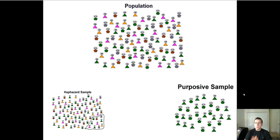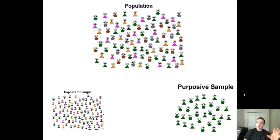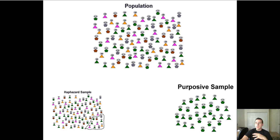There's also purposive sampling, where you select a specific group from the population because you want to study that specific group — for example, 'I only want to know what children have to say about this.' There can be valid applications for this, but you can't then claim you're talking about the whole population. You have to be careful about the generalizations you make after using this kind of sampling.